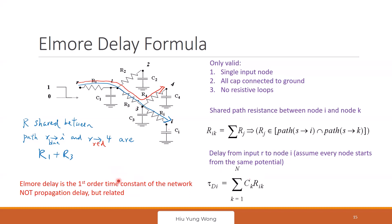Let's understand why the shared resistance matters physically. Think about this: if I want to charge up Ci, can I do it without charging up C3? Impossible. By physics, if I want Ci to reach 5 volts, C3 has to go to 5 volts first. If C3 is always at 0 volts, I cannot charge Ci to 5 volts. So C3 affects my time — I need to charge up C3 first through that shared resistance, and once it charges up, I can charge mine.